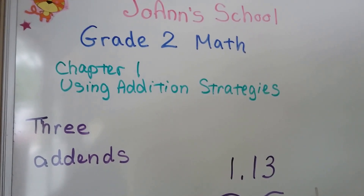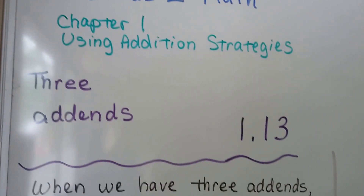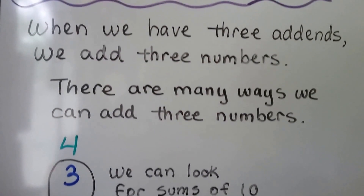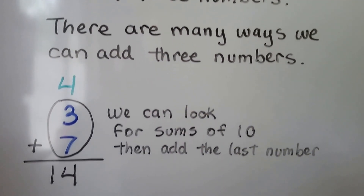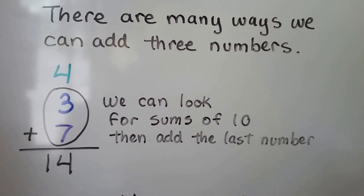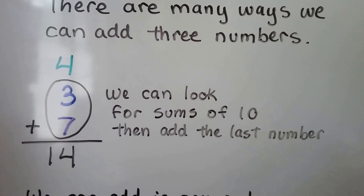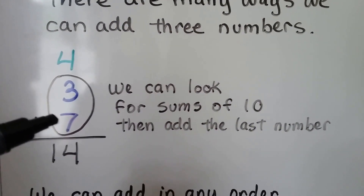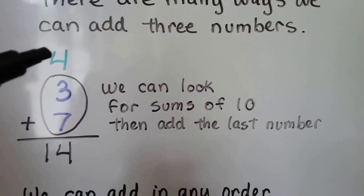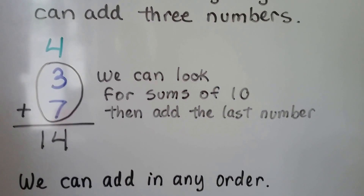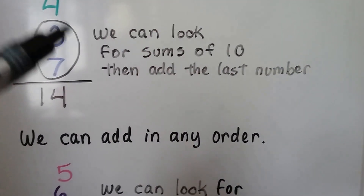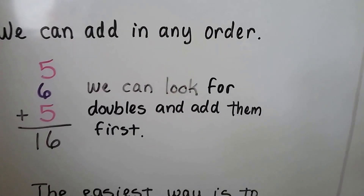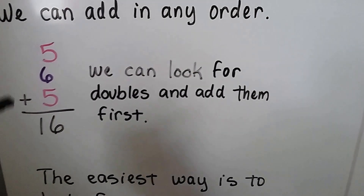Lesson 1.13: Three addends. When we have three addends, we add three numbers. There are many ways we can add three numbers. We can look for sums of ten and then add the last number to that. We can also add them in any order — add two first and then add the last one.